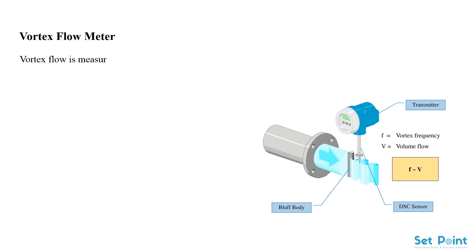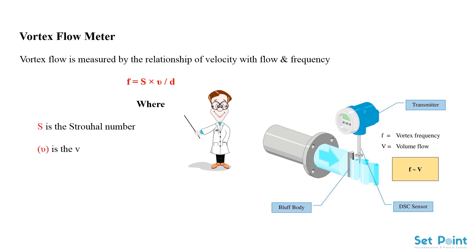Vortex flow is measured by the relationship of velocity with flow and frequency. F equals S multiplied by V divided by D, where S is the Strouhal number, V is the velocity of the fluid, D is the width of the shedder, and RE is the Reynolds number.